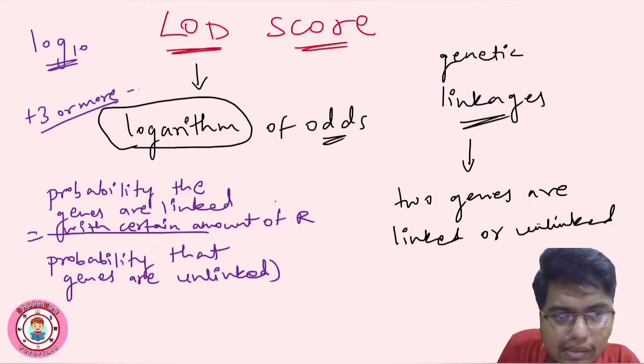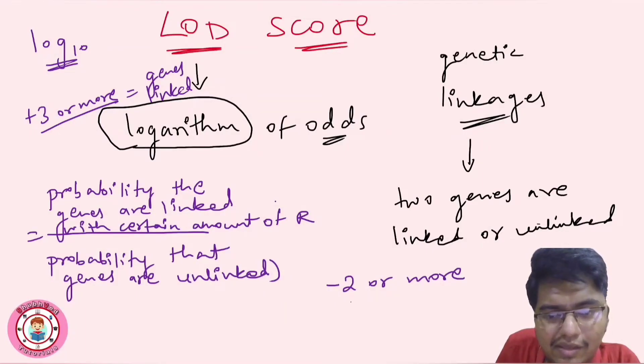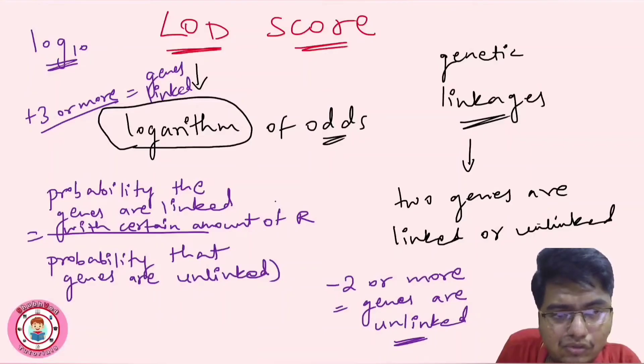And when minus 2 or more, genes are unlinked. Genes are unlinked. So we have to remember these values: plus 3 or more genes are linked, and minus 2 or more genes are unlinked.